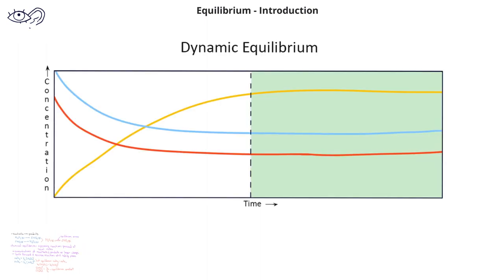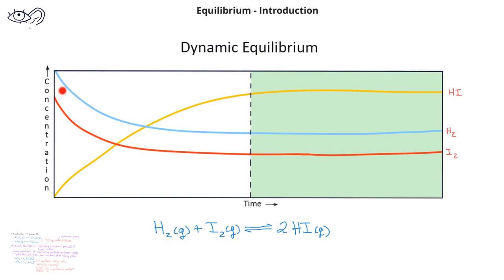Let's look at an equilibrium example in graphical form. In this graph, we have the concentrations of three different species: the yellow line representing the concentration of hydrogen iodide, the blue line representing the concentration of H2, and the red line representing the concentration of I2. When H2 and I2 react, they combine together to form hydrogen iodide. Initially, we have some concentration of hydrogen gas and some concentration of iodine, and we also have no hydrogen iodide present. However, as we allow the reaction to begin to proceed, we see decreases in the concentration of the hydrogen and iodine and an increase in the concentration of the hydrogen iodide.